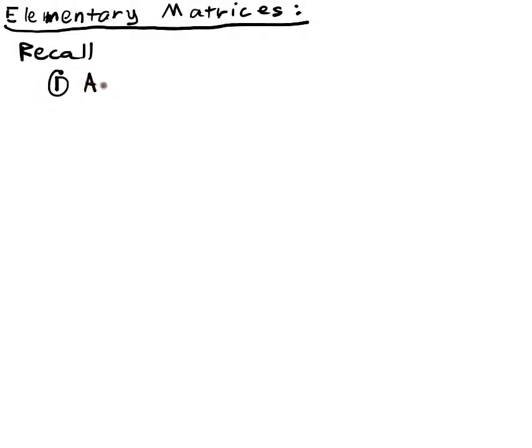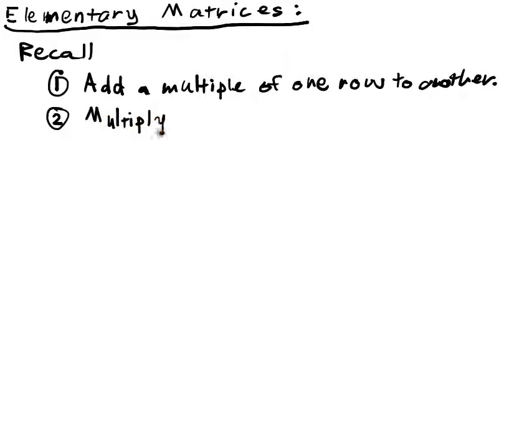So remember that we had three essential operations. The first operation was we add a multiple of one row to another. Two, we can multiply a row by a scalar, or just a real number. Scalar just distinguishes this from a matrix or later a vector. For three, we can interchange rows.